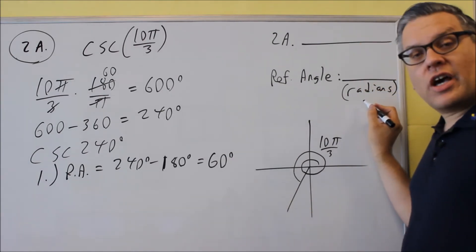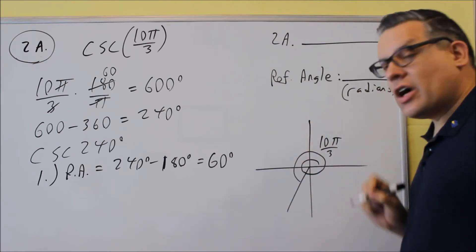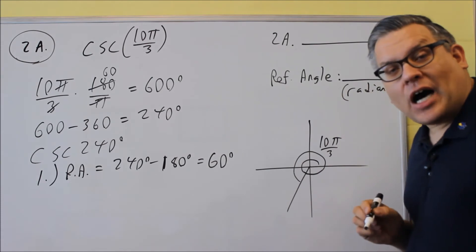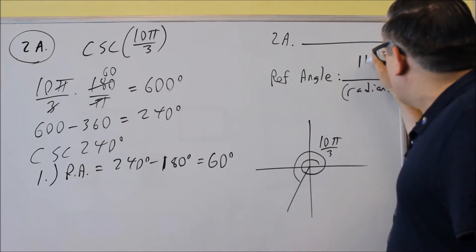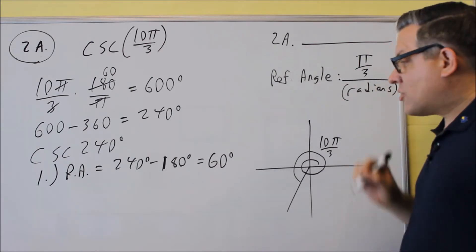Now it does tell us to express that in radians, and it will on your test as well. So we have to just express that in the right measurement. So we want to convert this back over into radians, multiplying by pi over 180. If you do that, you're going to get pi over 3. So pi over 3 will be the reference angle that answers the next thing.